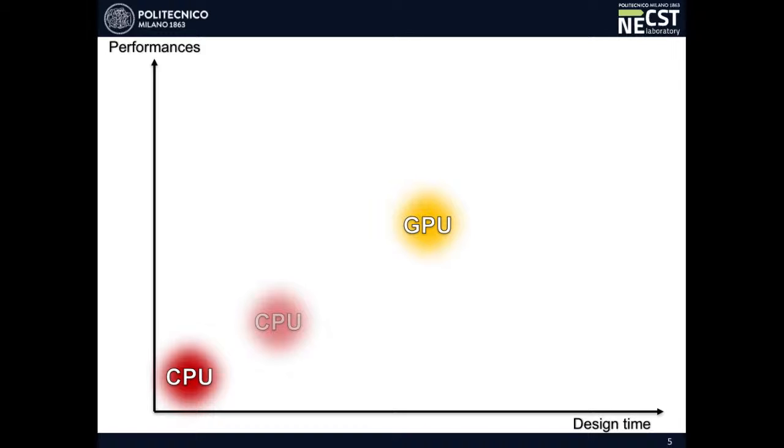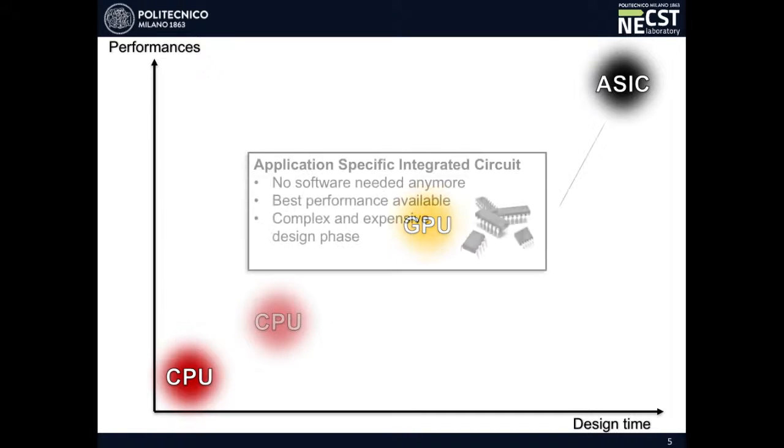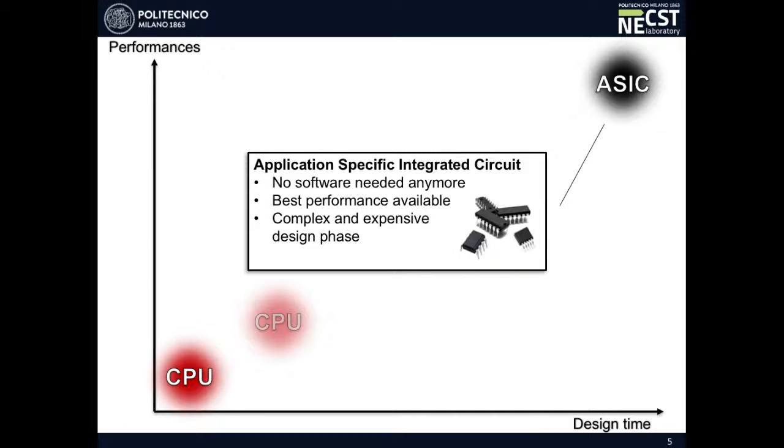Here, you might think about speeding up anything, just getting rid of the control overhead due to the management of the software running, replacing anything with your own hardware architecture that doesn't need software anymore. This means that, depending on how you design your architecture, you can draw the best performances out of there. But anyway, the design phase would take more or less forever, without many chances of decreasing it.